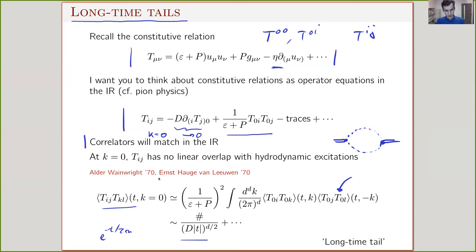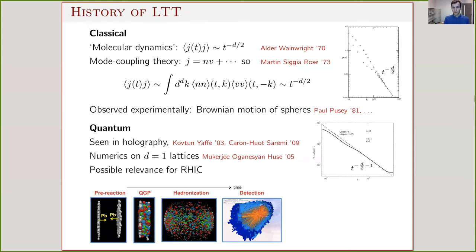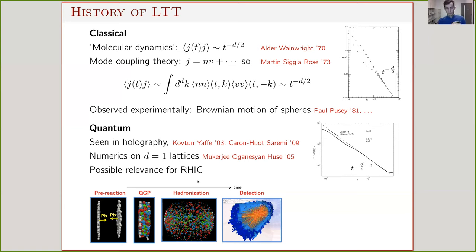This slow polynomial decay is an example of loop effects in hydrodynamics. These long-time tails were actually discovered a very long time ago in classical numerical simulations (molecular dynamics), where people studying correlation functions of currents found they decayed much slower than expected — polynomial instead of exponential — and the theoretical explanation soon followed. It also occurs in quantum systems: it's been seen in holography, and in numerics on 1D lattices using exact diagonalization. It has potential relevance for heavy-ion collisions as a correction to leading hydrodynamics at the timescales of quark-gluon plasma observations.